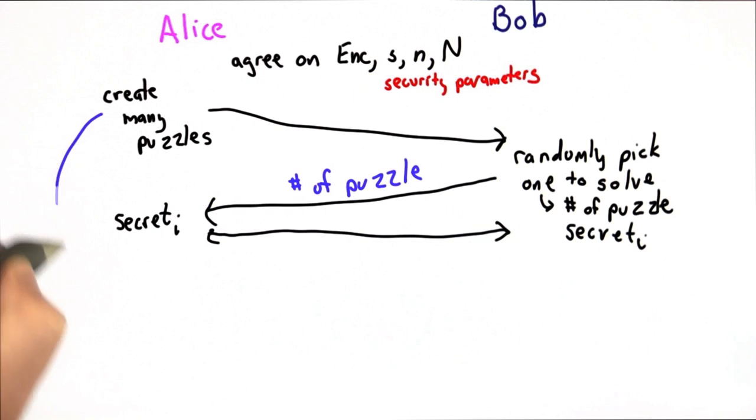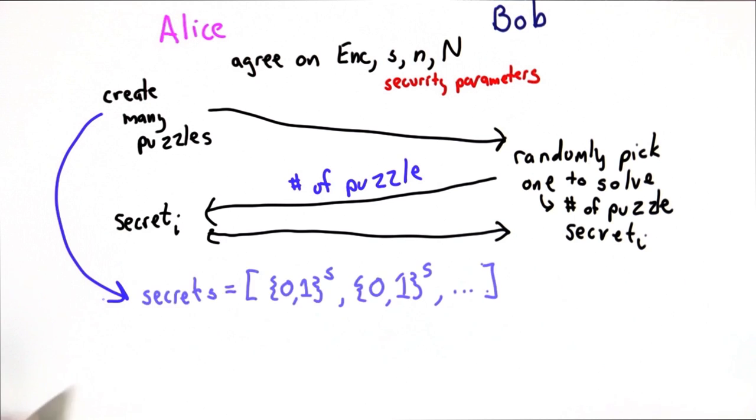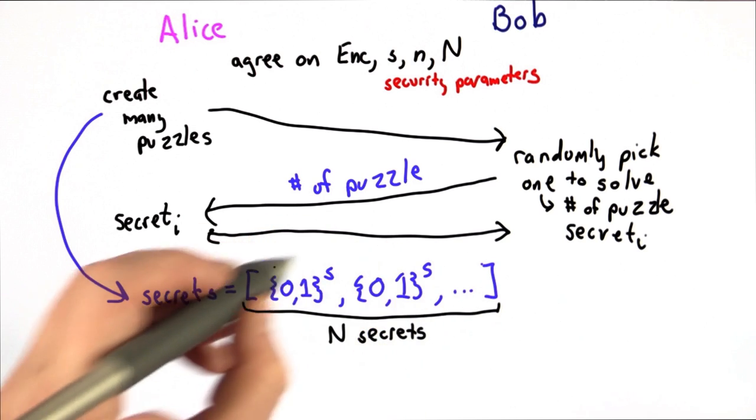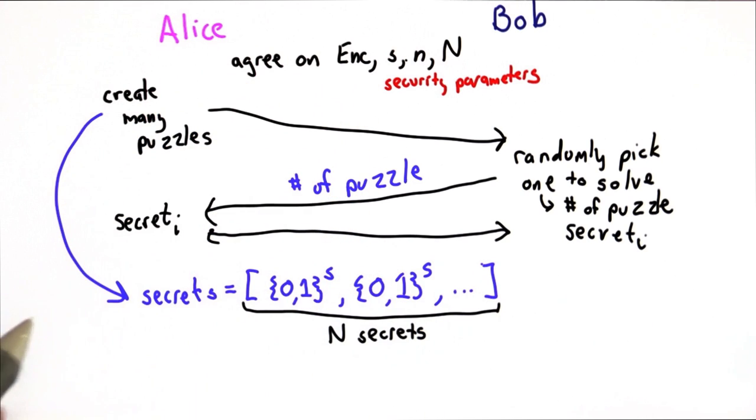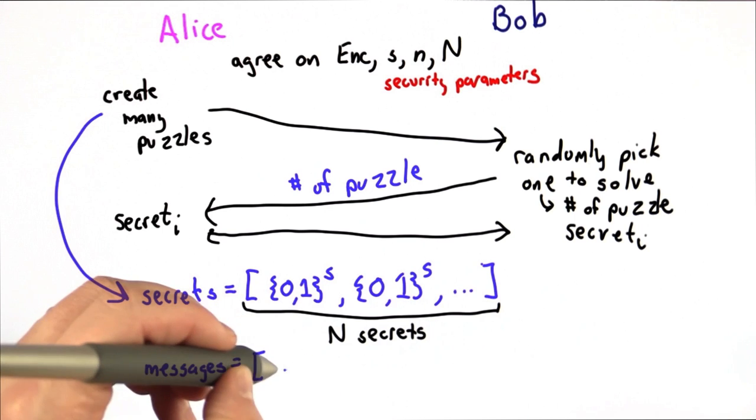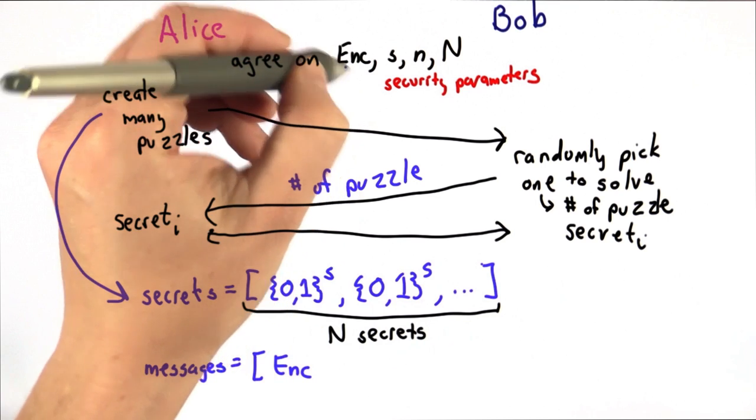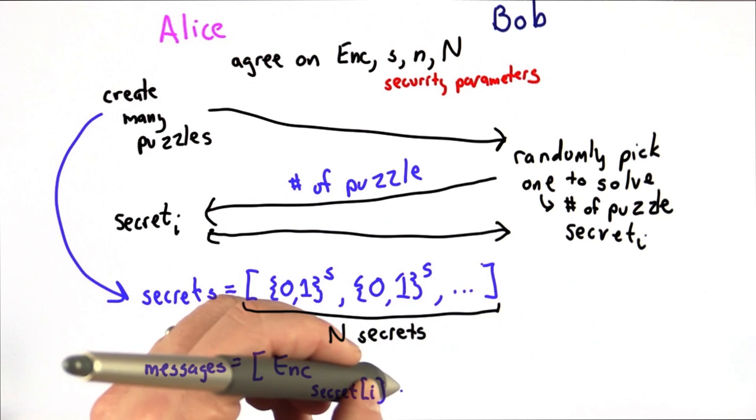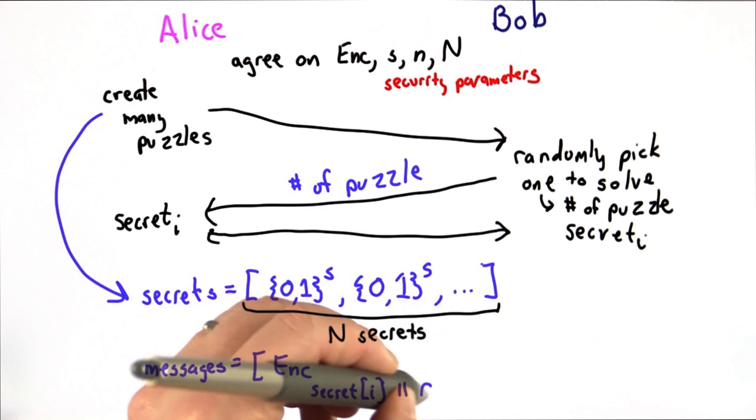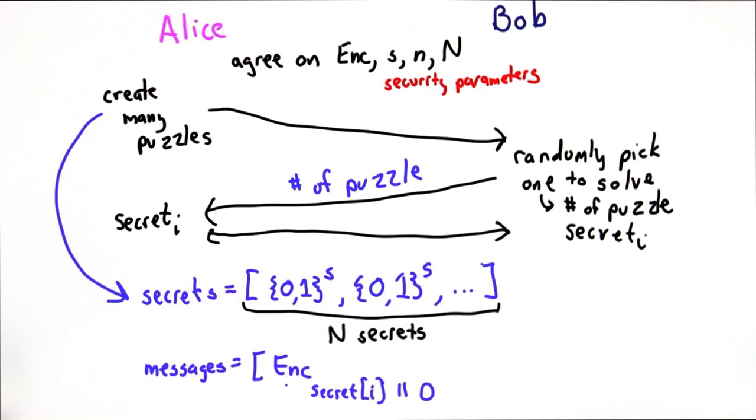Here's how the steps work in a little more detail. In order to create puzzles, Alice creates a list of N secrets. Each one of these is a random number, s bits long. Then she creates a set of messages, also N messages, and each message will be encrypted using the encryption function that they agreed on using a key that's the corresponding secret concatenated with enough zeros to make the appropriate key length.